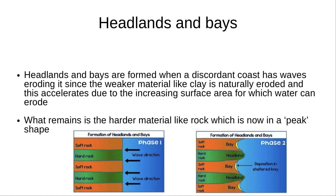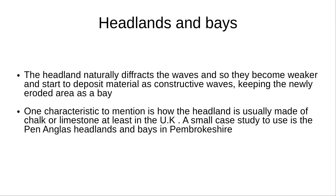Headlands and bays are formed when a discordant coast has waves eroding it, since the weaker material like clay is naturally eroded, and this accelerates due to the increasing surface area for which water can erode. What remains is the harder material like rock, which is now in a peak shape. This headland naturally diffracts the waves, and so they become weaker and start to deposit material as constructive waves, keeping the newly eroded area as a bay. One characteristic to mention is how the headland is usually made of chalk or limestone, at least in the UK.